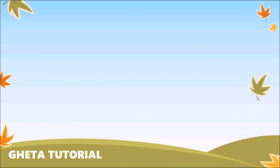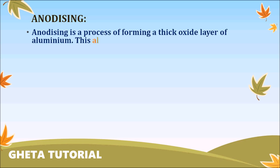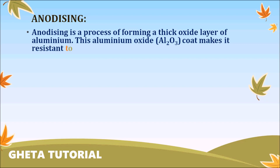In this video, we are going to learn about the anodizing process. Anodizing is a process of forming a thick oxide layer of aluminum. This aluminum oxide makes it resistant to further corrosion. Aluminum oxide is Al2O3. During this process, we are forming oxide layers on the aluminum metals.